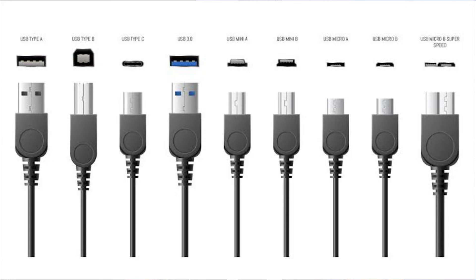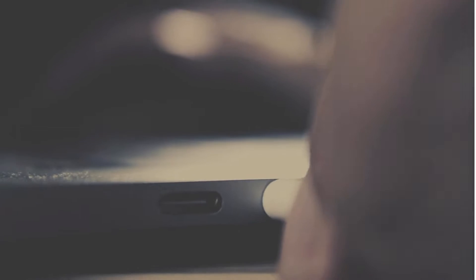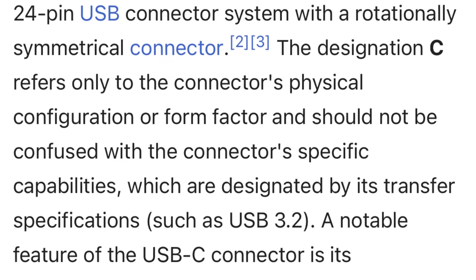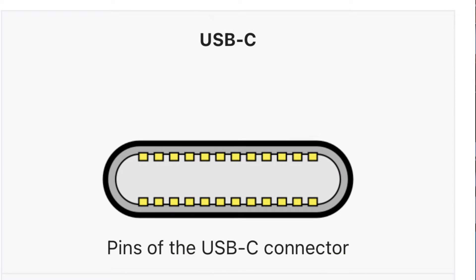USB, or Universal Serial Bus, has been around since the mid-90s, but there's been nothing universal about it because working out what connector you need for what task has never been easy. USB-C is the latest standard of connector that is trying to solve that problem. The most important thing to understand is that USB-C is just the connector type — that's why you'll hear it called a Type-C connector. It can actually support USB 2, USB 3, USB 4, Thunderbolt 3, and Thunderbolt 4. There's a heap of different standards that are all connected using a USB Type-C connection.